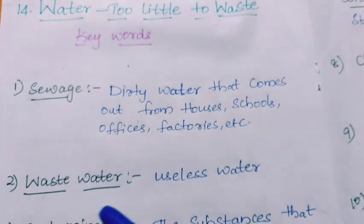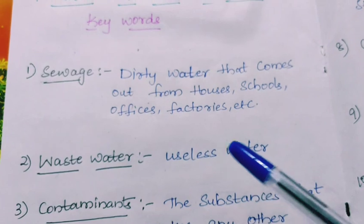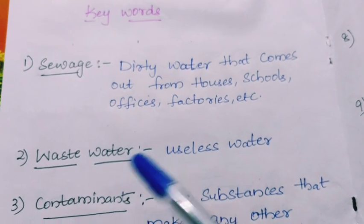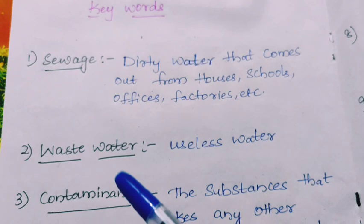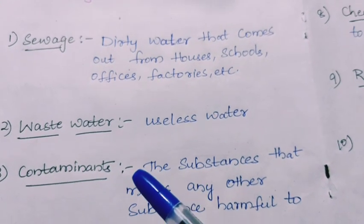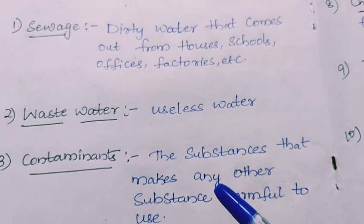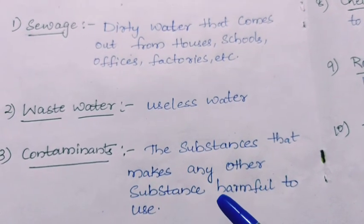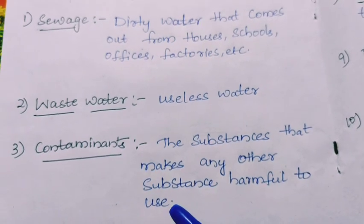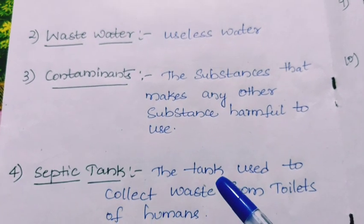Wastewater means useless water which we have already used, so it is called wastewater. Next is contaminants — contaminants are the substances that make any other substance harmful to use.